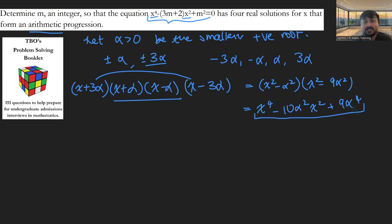But this expression here is supposed to be identical to this expression here on the left. And so we can make two essentially simultaneous equations here. So we get 10α^2 = 3m + 2. And we get that 9α^4 = m^2. And we have two equations here, two unknowns, but we're not really interested in α. We're more interested in m.